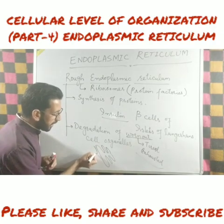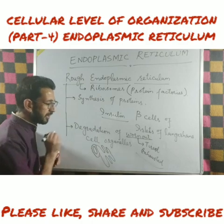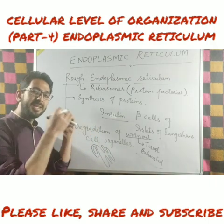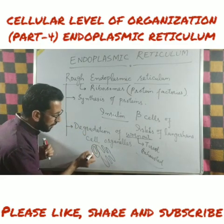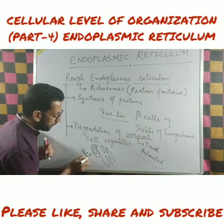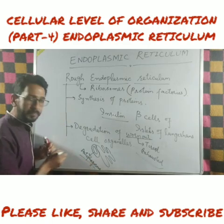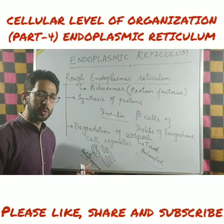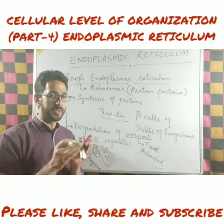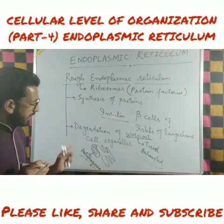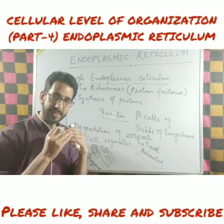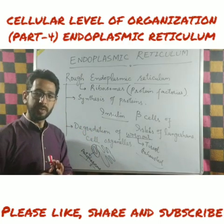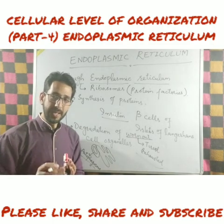This rough endoplasmic reticulum wraps itself around the worn out cell organelle, and they form a structure which is called as autophagosome. This autophagosome then gets detached from the rough endoplasmic reticulum and comes in contact with the lysosome, which then degrades this worn out cell organelle. So the wrapping of the worn out cell organelle is done by the rough endoplasmic reticulum, making this an important function.